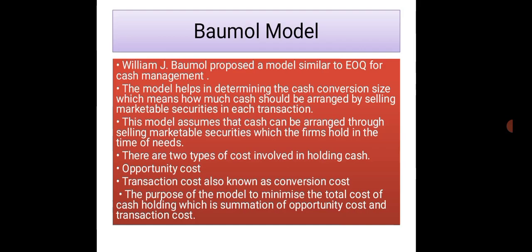There are two types of costs involved in holding cash: opportunity cost and transaction cost, which is also known as conversion cost. The purpose of this model is to minimize the total cost of cash holding, which is the summation of opportunity cost and transaction cost.